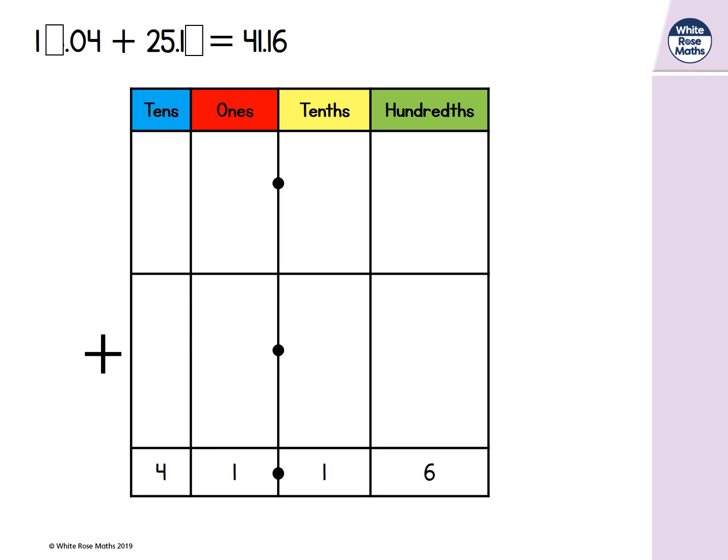Now let's look at a slightly trickier example. We'll start again by representing the digits that we know using counters in our place value grid.